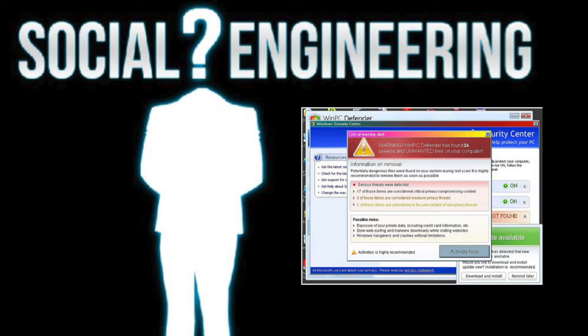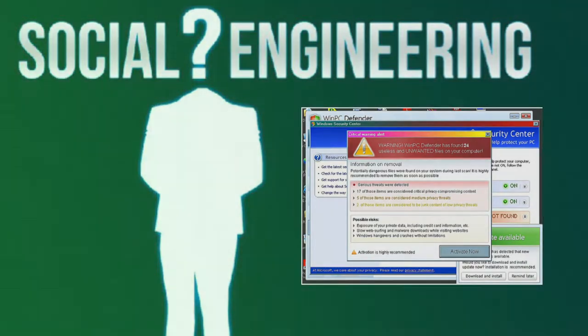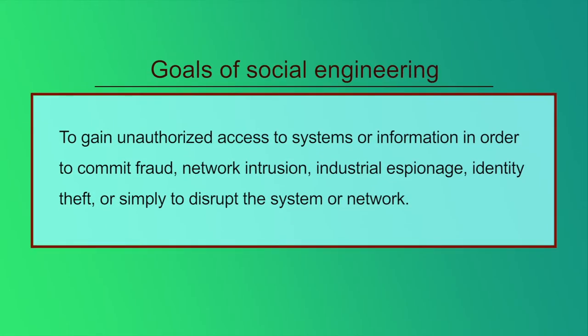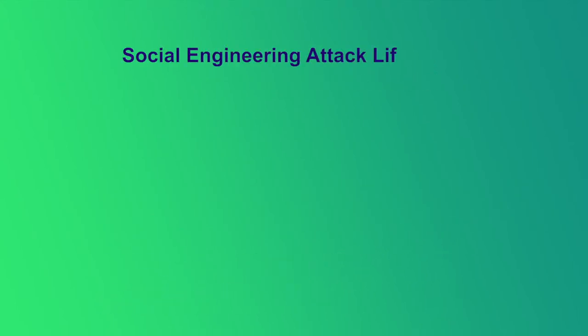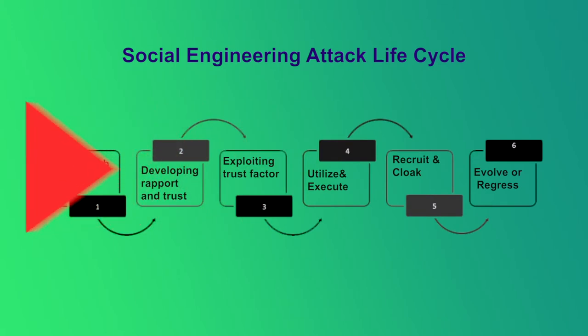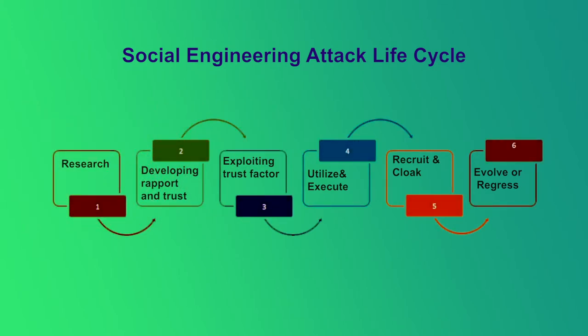The basic goals of social engineering are the same as hacking in general — to gain unauthorized access to systems or information in order to commit fraud, network intrusion, industrial espionage, identity theft, or simply to disrupt the system or network. A broad view of the social engineering attack life cycle has six phases: Research, Developing Rapport and Trust, Exploiting Trust and Utilizing Information, Cloak Activities, and Evolve or Regress.